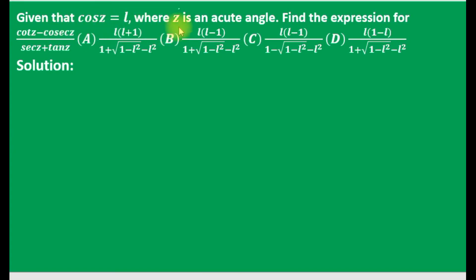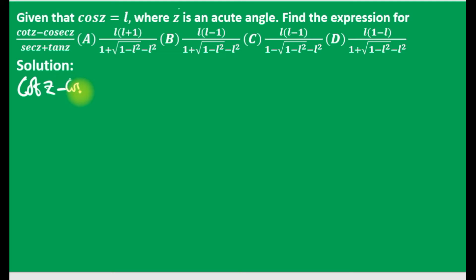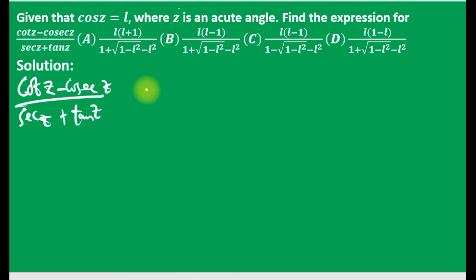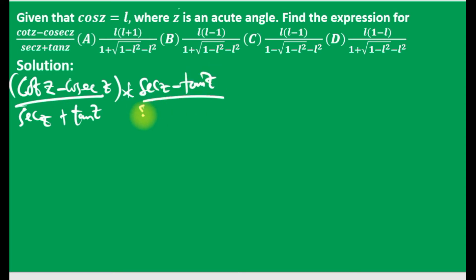We are given that cos z equals L, where z is an angle. We are asked to find a fraction for that. So we'll rationalize — multiply the numerator and denominator by the conjugate. We multiply cos z over sec z plus tan z by sec z minus tan z over sec z minus tan z.